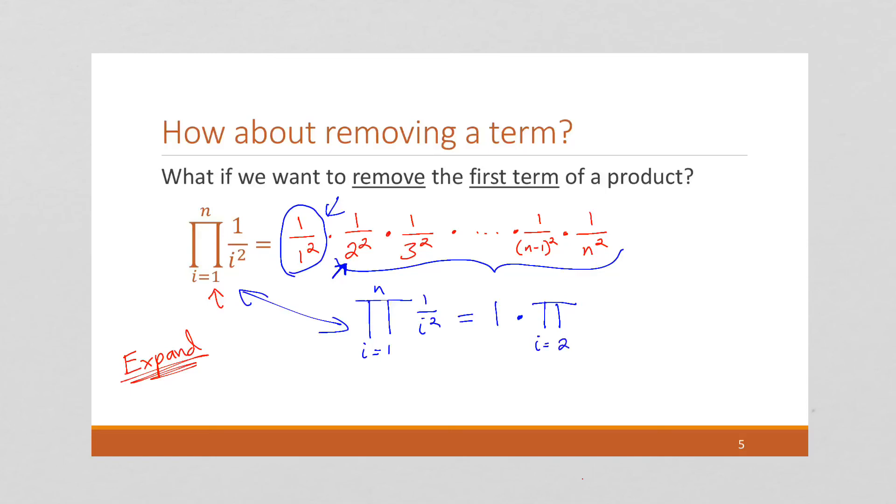So i is going to equal 2, and we still go to n of 1 over i squared. Right? So in fact, because multiplying anything by 1 is the same thing, we could just say that this product is the same as that product.